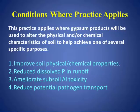One of them is to improve soil physical and chemical properties. The second is to reduce dissolved phosphorus in runoff, which Dexter just talked about. The third is to ameliorate subsoil aluminum toxicity. And the fourth is to reduce the potential of pathogens to transport off from manures.